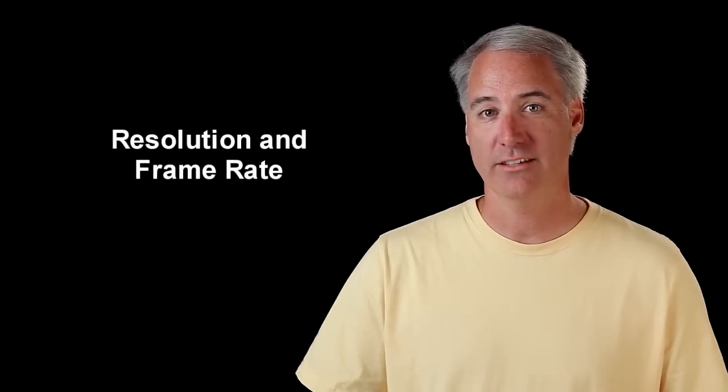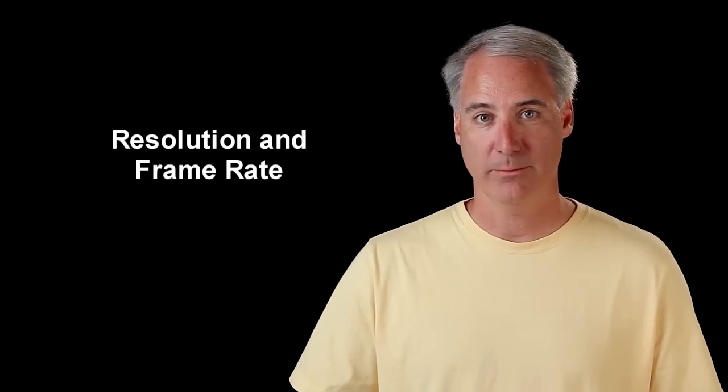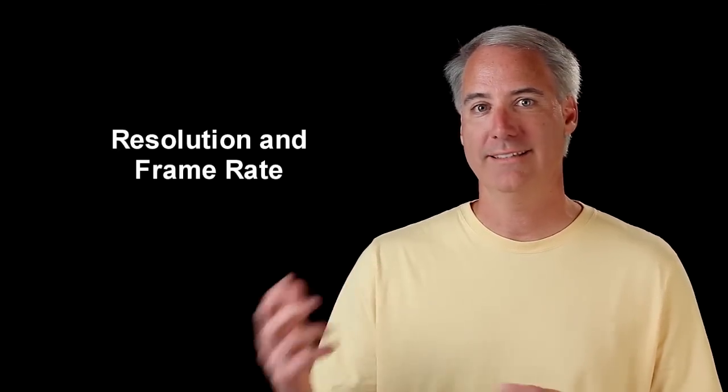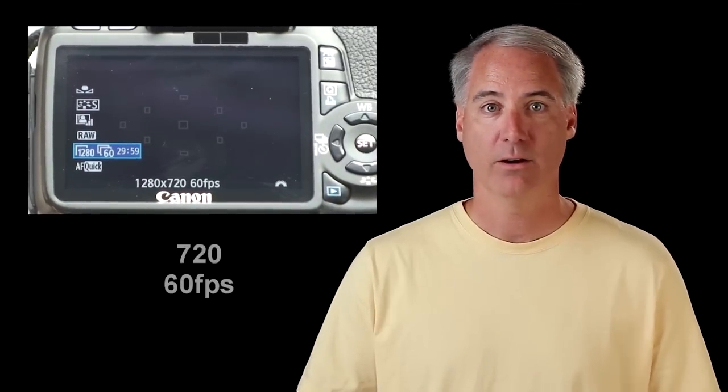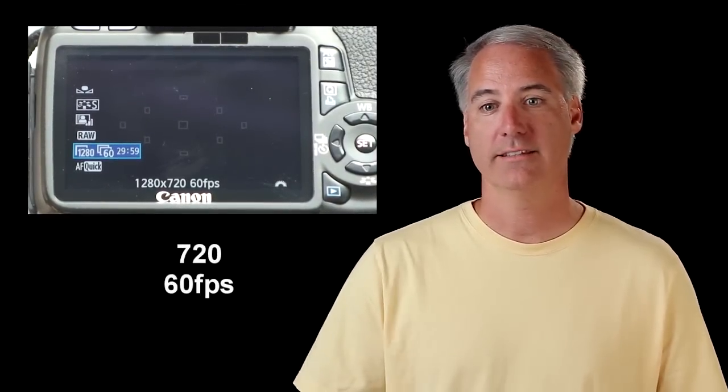So the first thing I want to check is the resolution and the frame rate. I usually go between 1080 at 24 frames a second, like I am now, or 720 at 60 frames a second. Usually if I'm shooting my kids, I like to slow them down in post, so I'm going to shoot at 720. In fact, I'd say 80% of the time that I shoot is probably in 720. And then in situations like this, where I'm just a moving head and it doesn't really matter so much in terms of movement, I'm going to shoot at 24 frames a second.